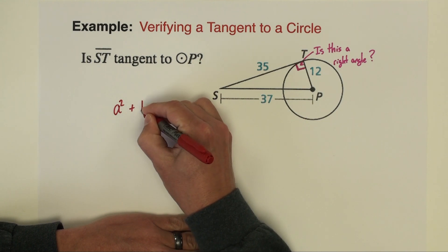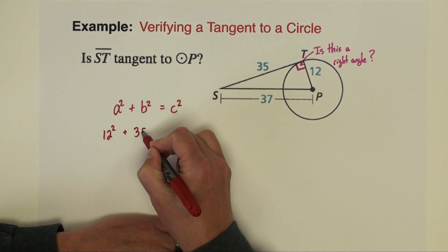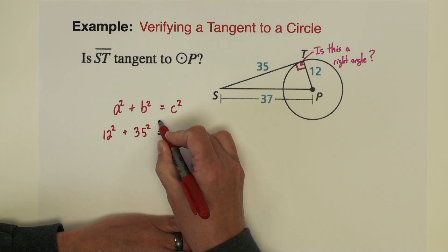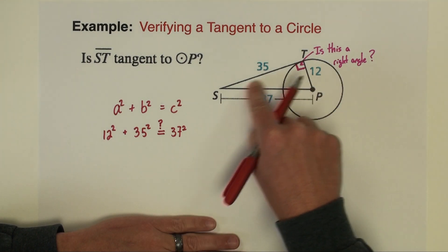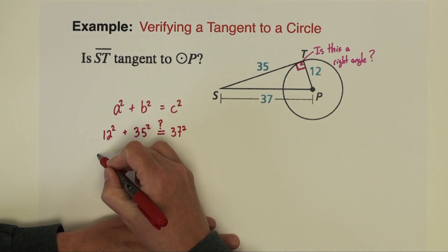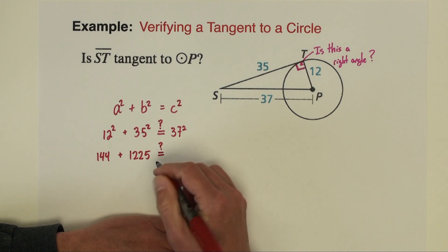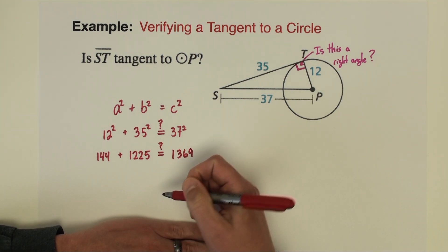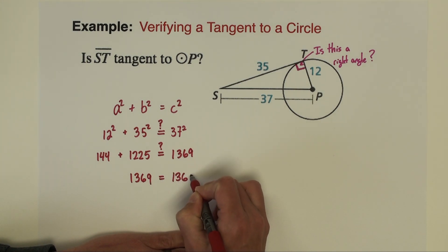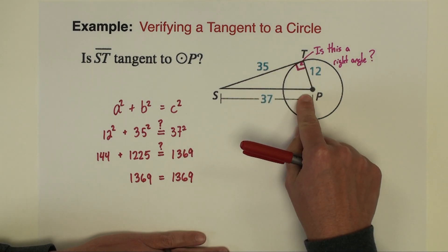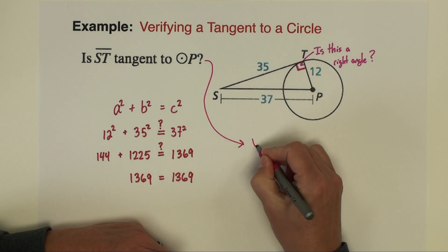We're going to use A squared plus B squared equals C squared. We can do 12 squared plus 35 squared and check whether that equals 37 squared. If these two sides equal each other, then this is a right angle and therefore the segment is tangent. 12 squared is 144, 35 squared is 1225, and 37 squared is 1369. Adding 144 and 1225 together, we get 1369 equals 1369. So this is a right triangle — therefore, yes, ST is tangent to circle P.